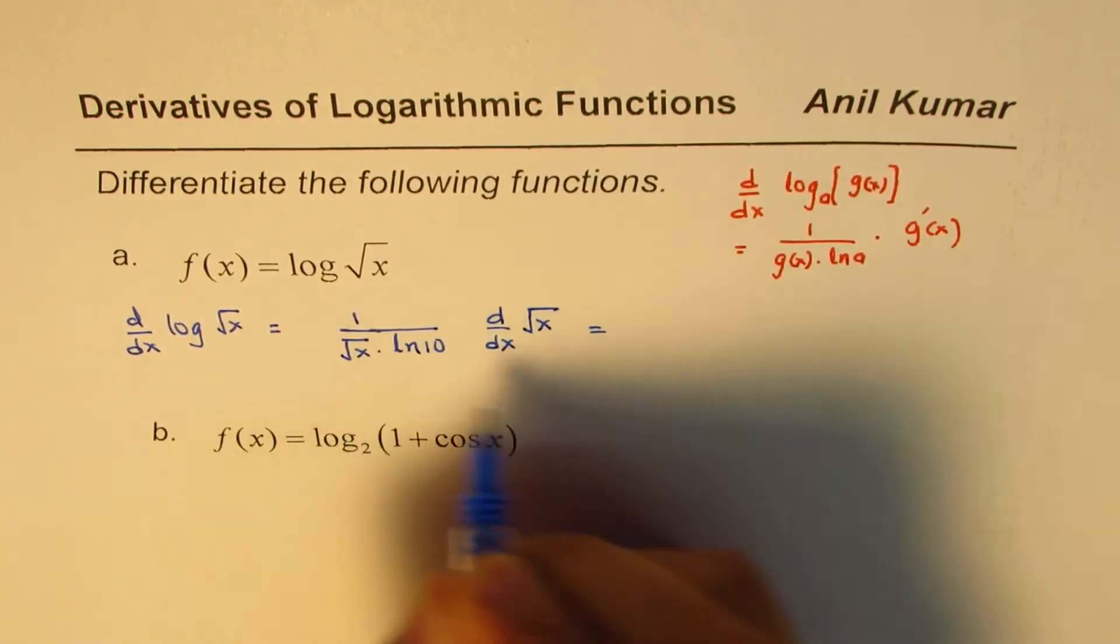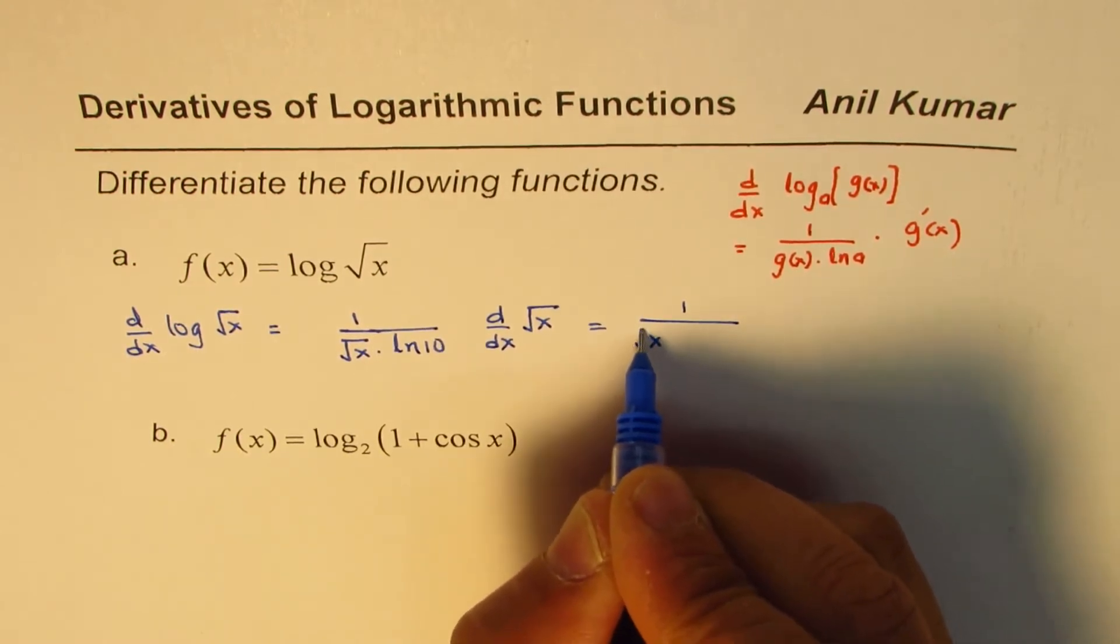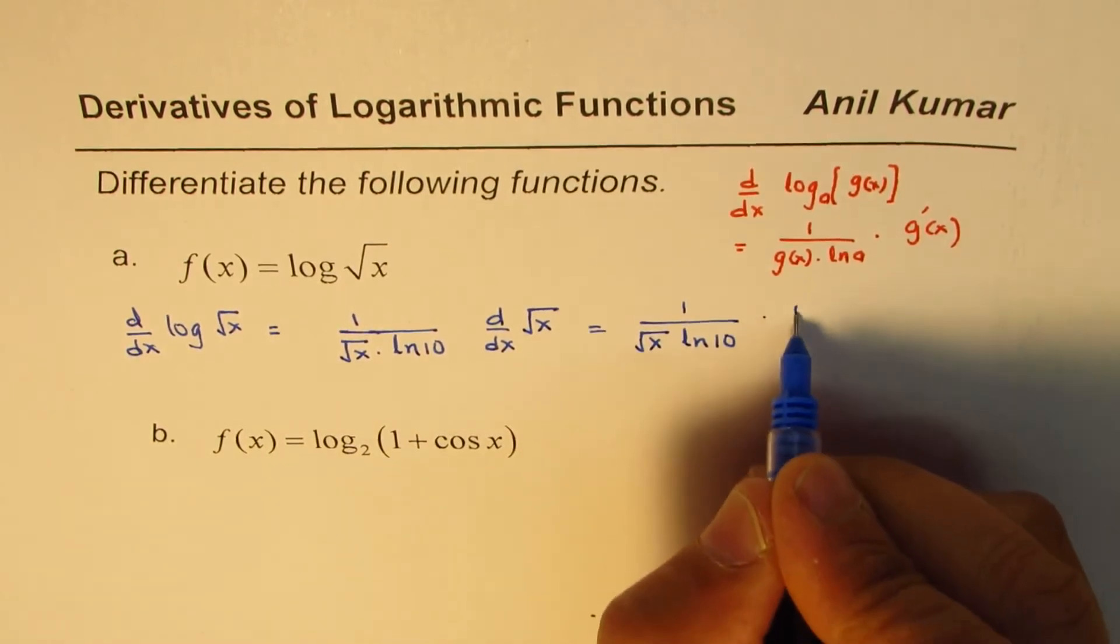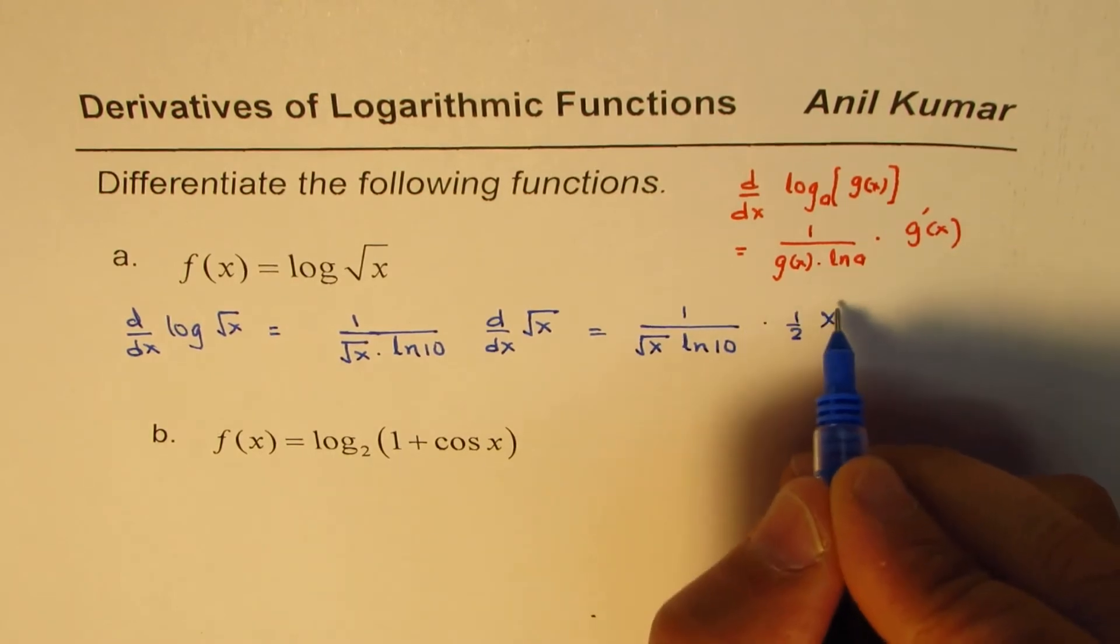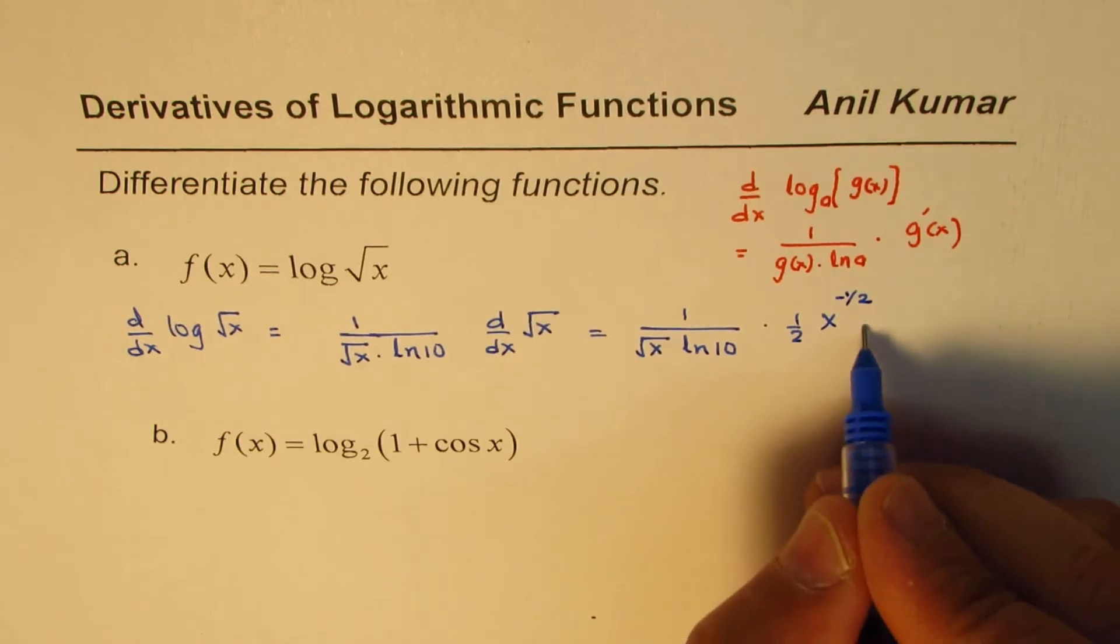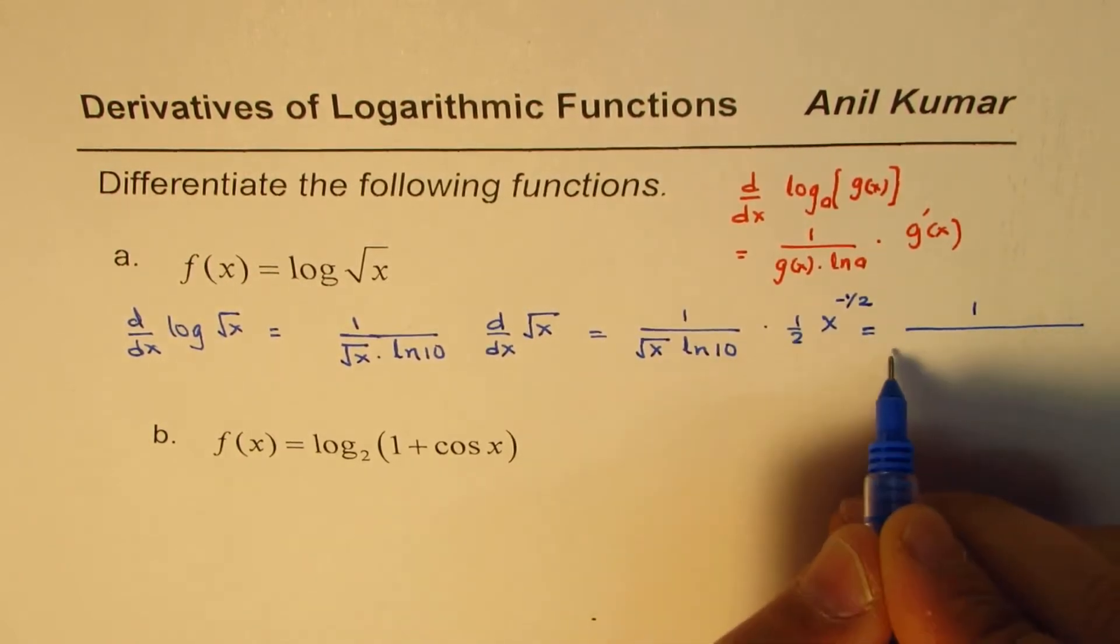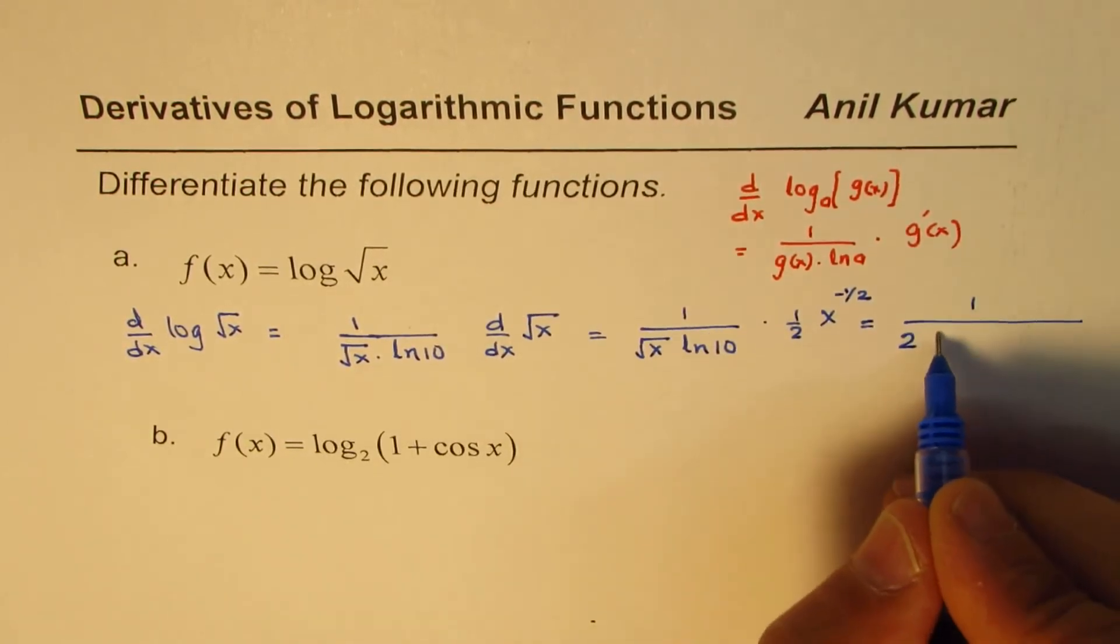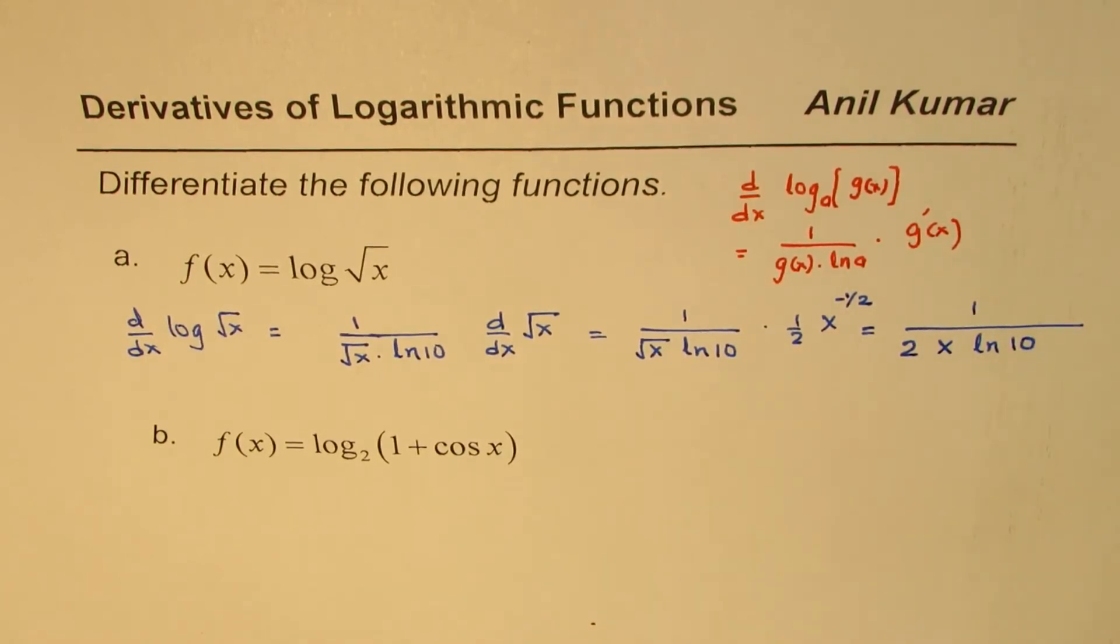Okay. So, that gives you 1 over √x ln 10, and derivative of √x is ½ x^(½ - 1), which is minus half. Or, so that comes in the denominator, so you get here as 1 over 2, square root of x times square root of x gives you x ln 10. So, that becomes the answer for the given question.